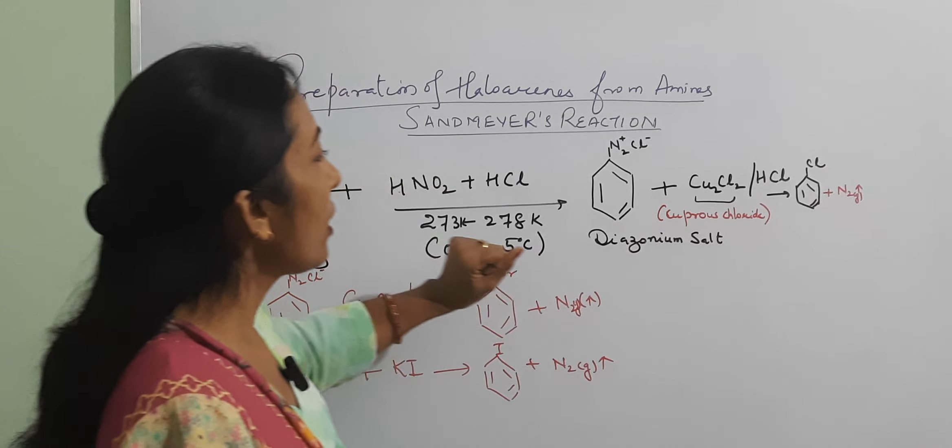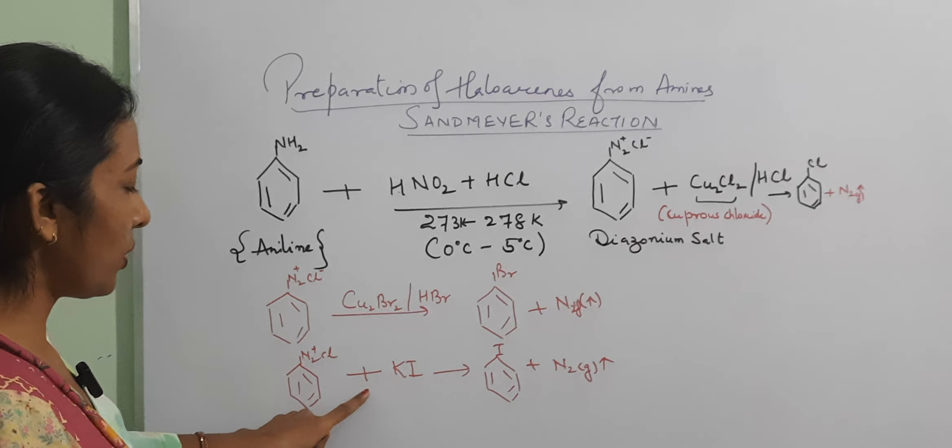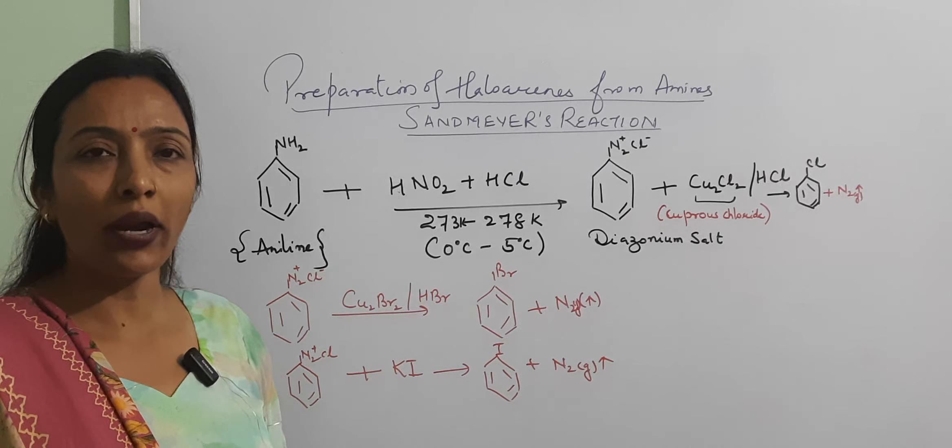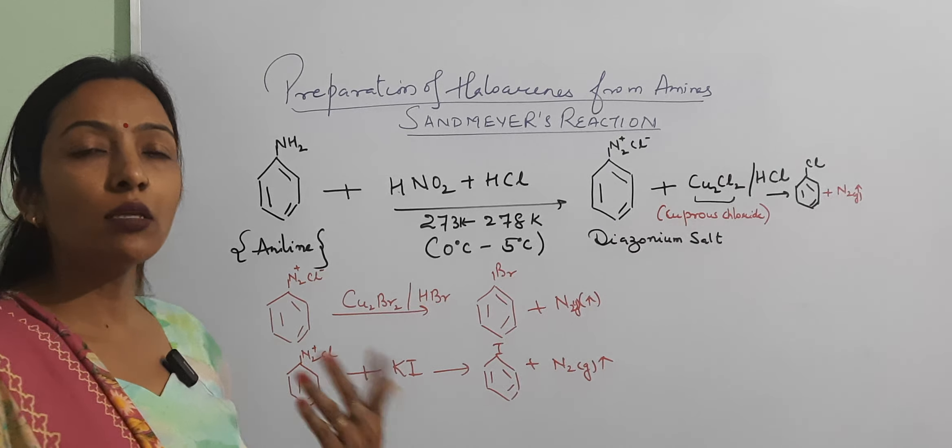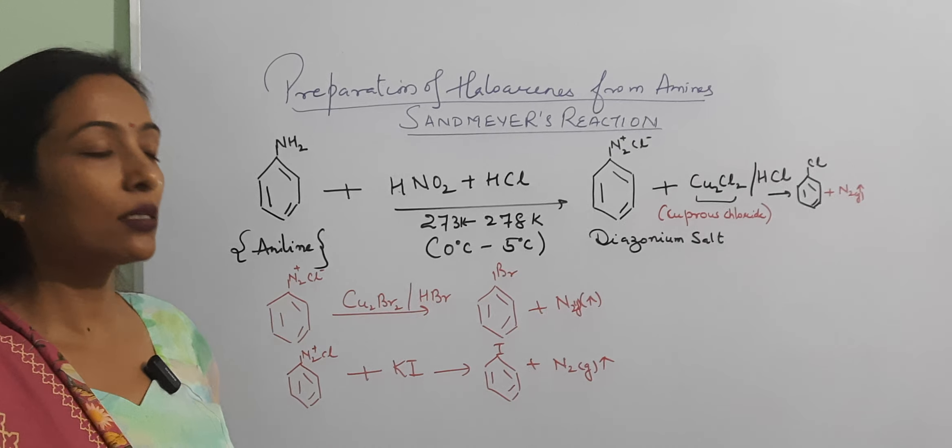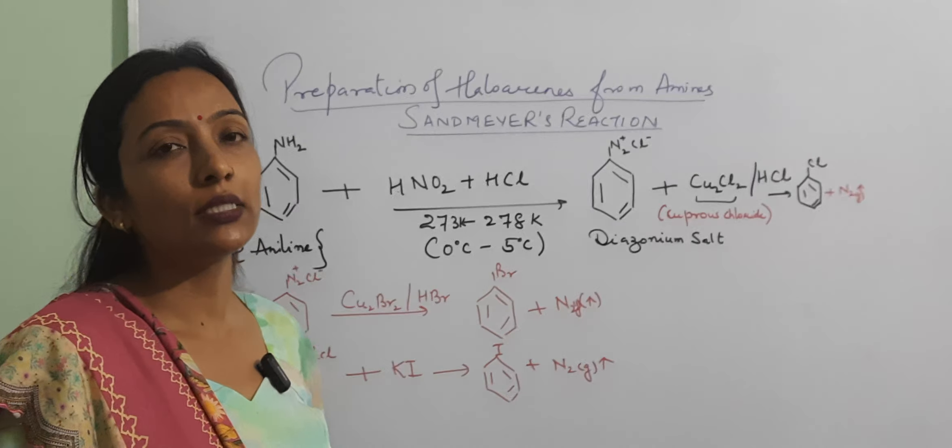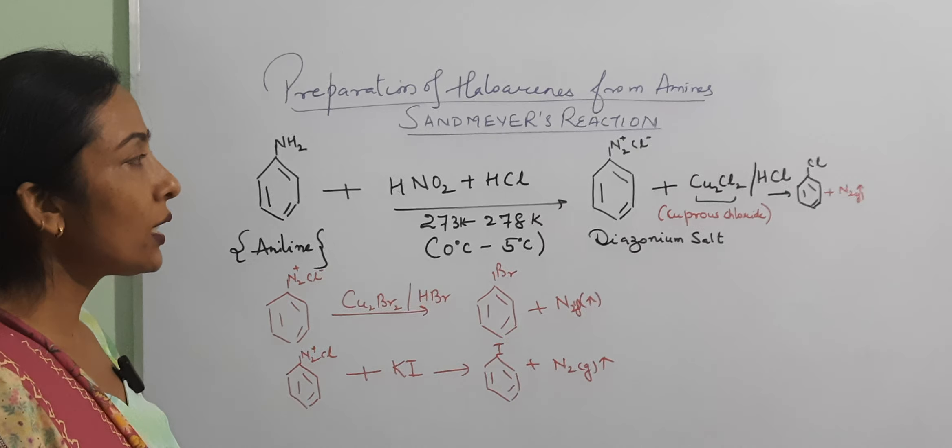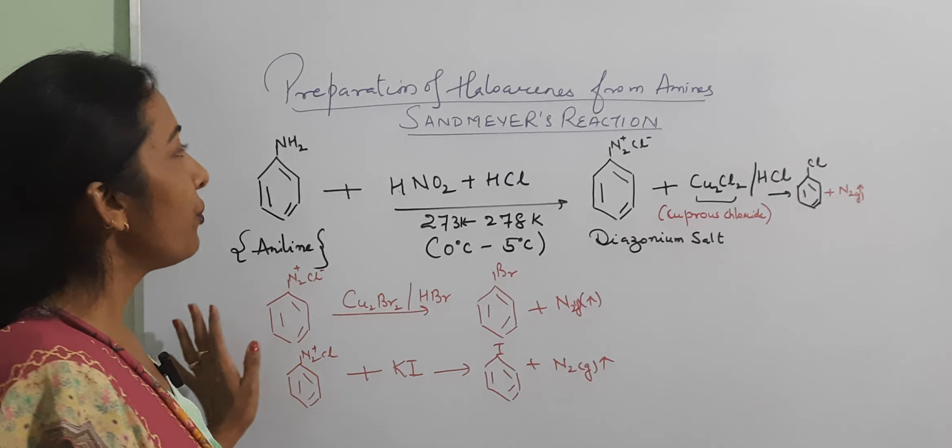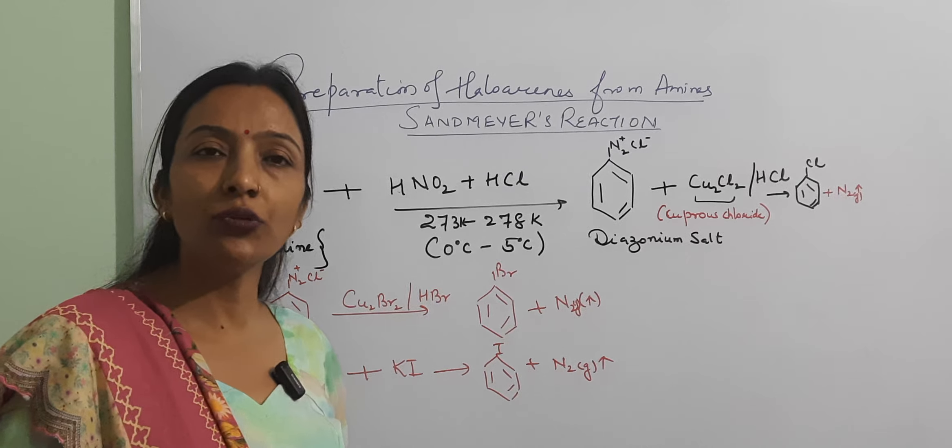But if we have iodobenzene, we are not required to use cuprous iodide. This reaction is simply potassium iodide. We are getting the iodobenzene. We finished with this. End of the reaction in the next video.